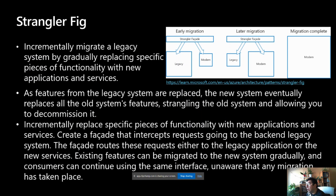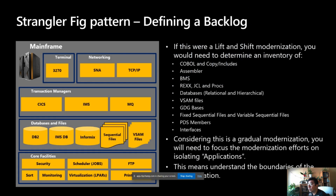Now let's get into the strangler fig pattern. This pattern shows a gradual picture: in an early migration the legacy system is bigger than the modern system, in a later migration the legacy is smaller than the modern, and in a complete migration you have only the modern system remaining. The idea is to incrementally migrate the legacy system by gradually replacing specific pieces. You create a facade that intercepts requests going to the backend legacy system. The anti-corruption layer and the strangler fig pattern complement each other closely.